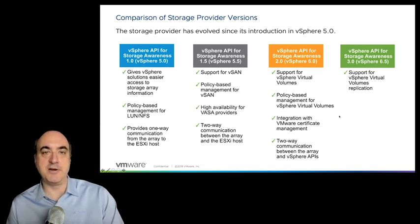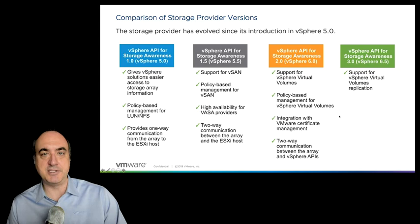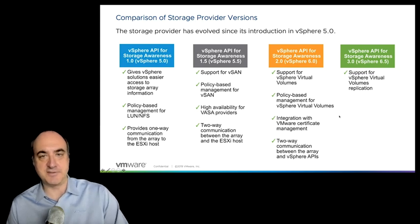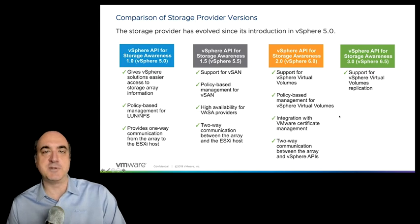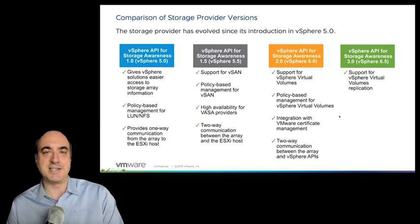With the two-way communication, not only can we understand the capabilities about the storage, but policies can actually be enforced on the underlying storage. That's where VASA 2.0 came out with vSphere 6 — two-way communication with the array. VASA 1.5 was two-way communication between the array and the ESXi host; VASA 2.0 is two-way communication between the array and the vSphere APIs. This is where, if you're using virtual volumes, you need VASA 2.0. VASA 2.0 provides the list of capabilities your storage provides, you create a policy with those characteristics, and then VASA 2.0 communicates back to the array to enforce placement of VMs on the disks that support just those features.